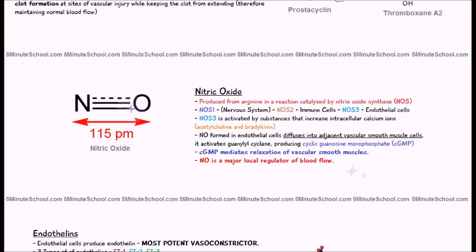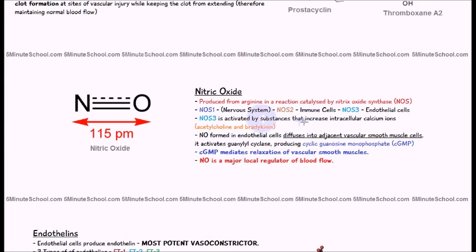Next, nitric oxide is produced from arginine in a reaction catalyzed by an enzyme called nitric oxide synthase (NOS). There are three types: NOS1 is found mostly in the nervous system, NOS2 in immune cells, and NOS3 in the endothelial cells — which is what we focus on here.